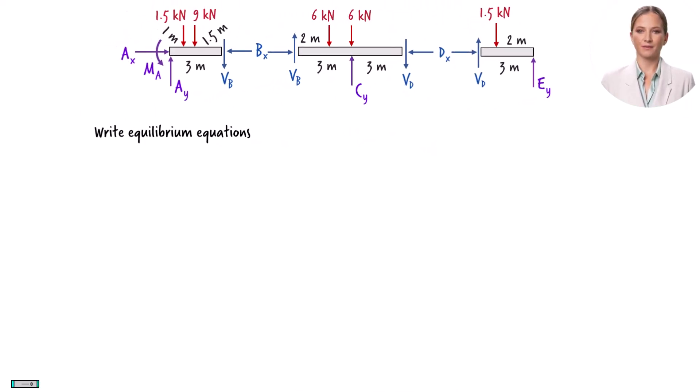For each segment of the beam, we need to write three equilibrium equations. These equations include the sum of the forces in the x-direction, the sum of the forces in the y-direction, and the sum of the bending moments about the z-axis must be zero.